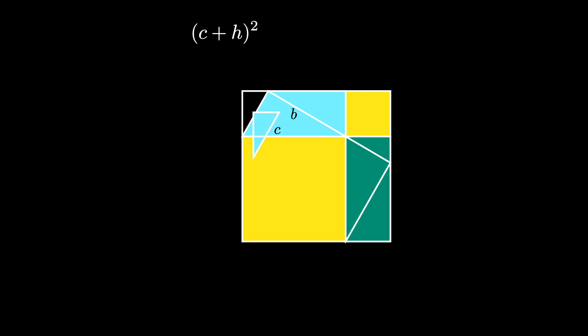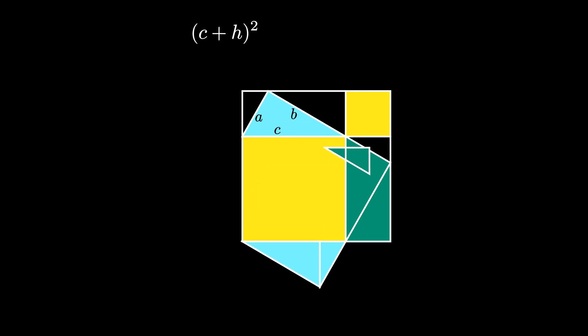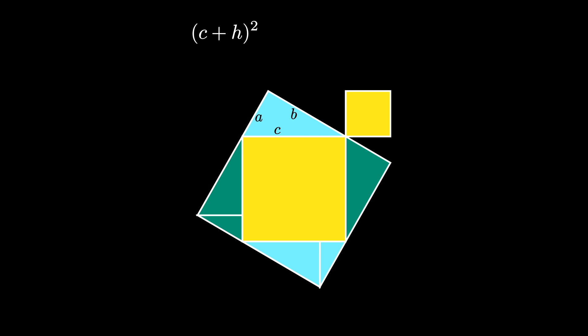But now move the four triangles used to create the two rectangles in this fashion here. The resulting shape is now two squares. The upper right square has a side length of H, and the new square that is diagonally tilted has a side length of A plus B. Therefore the area contained is the quantity A plus B squared added to the quantity H squared.